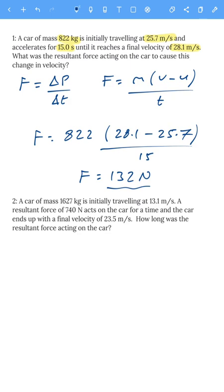Let's try the second one. The car has a mass of 1627 kilos, initially travelling at 13.1 meters per second. We know the force is 740 newtons, it acts on the car for some time, and the car ends up with a final velocity of 23.5. How long was the resultant force acting on the car? The equation is force equals change in momentum divided by change in time, and we need to find time.